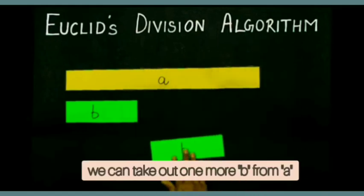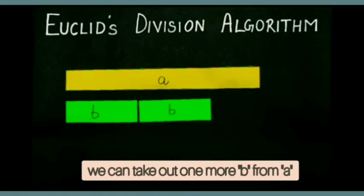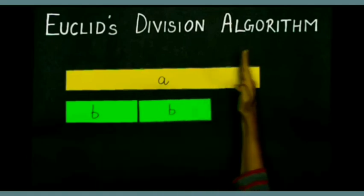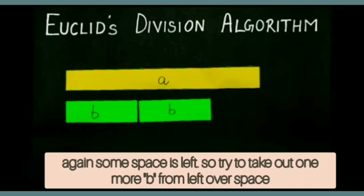We can take out one more B from A. We can observe that some more space is left.